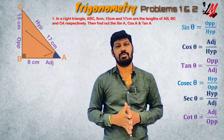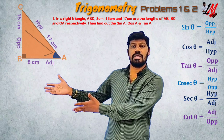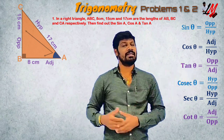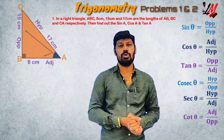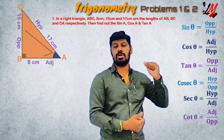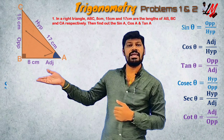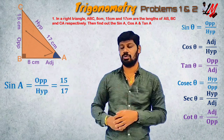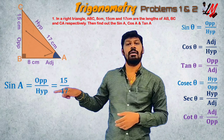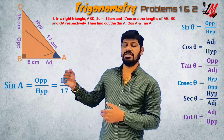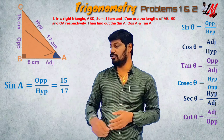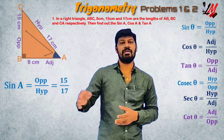I will mention the values. I will discuss these ratios. Sine A is equal to opposite by hypotenuse, which is BC by AC. BC value is 15 and AC value is 17. So, sine A is equal to 15 by 17.